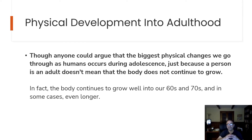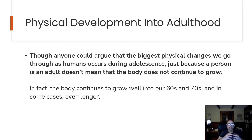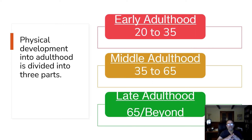The physical development into adulthood — though anyone could argue that the biggest physical changes we go through as humans occurs during adolescence, just because a person is an adult does not mean the body does not continue to grow. In fact, the body continues to grow well into our 60s and 70s, and in some cases even longer. Physical development into adulthood is divided into three parts: early adulthood 20 to 35, mid adulthood 35 to 65, and late adulthood 65 and beyond.